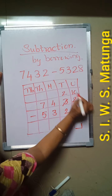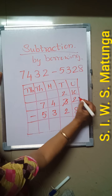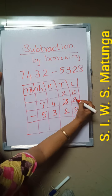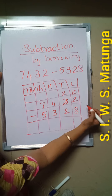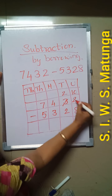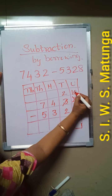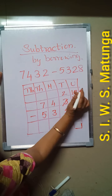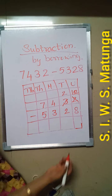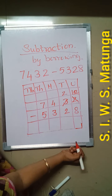One 10 will go to the units place. That is 10. 10 plus 2 is 12. So now you have 12 in the units place.